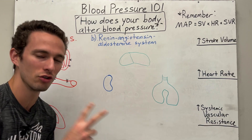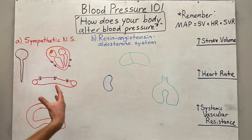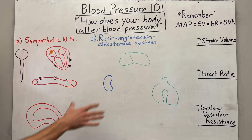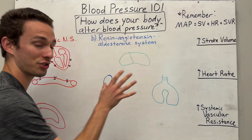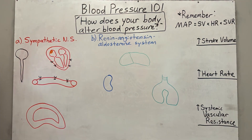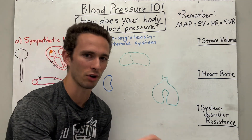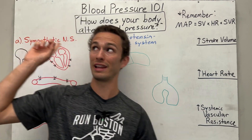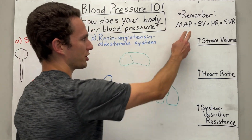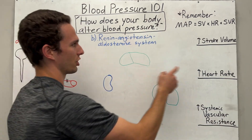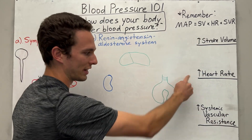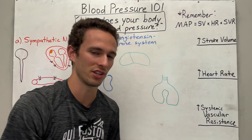I'm going to divide it into two main sections on how your body raises blood pressure. We're going to talk about the sympathetic nervous system and its effects to raise it, as well as the renin-angiotensin-aldosterone system, the RAS system. Remember that arterial pressure — the average of your artery pressure — is combined with three values: stroke volume, heart rate, and systemic vascular resistance.